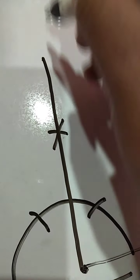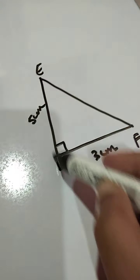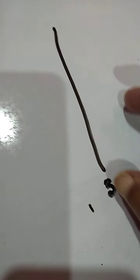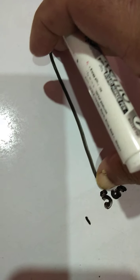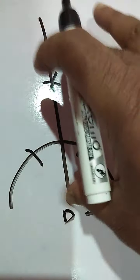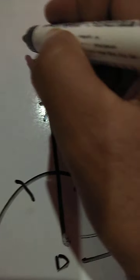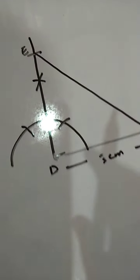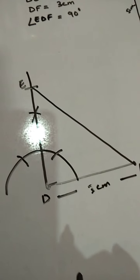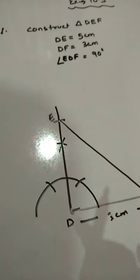We have to draw this line a little bit bigger. The length of DE is 5 cm, so we will draw one line of measurement 5 cm. With the help of a compass, you will measure this particular line, and without disturbing the length, put the compass point on D and draw one arc. We will name this point as E, and finally we have to join E and F. This is the required construction of question number 1 of exercise 10.3. Now let's go to question number 2.